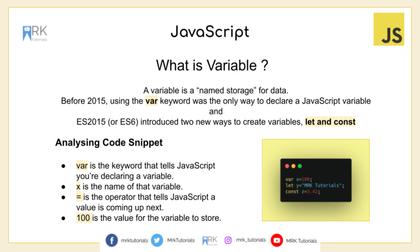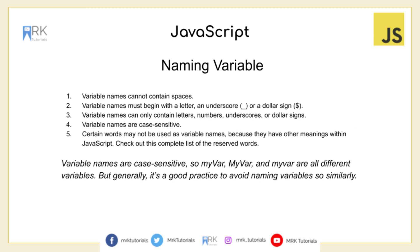In this code snippet we have var x equal to 100. The compiler, while reading this line, will allocate some memory with the type integer — as we discussed in the video on primitive type versus reference type. Similarly, the next two lines allocate memory for y as string type and z as float type. Now that we understand what a variable is and the keywords used to declare it, let's understand the rules for naming variables.